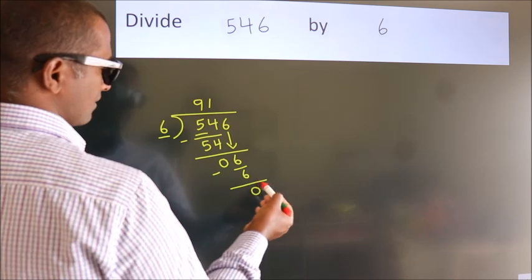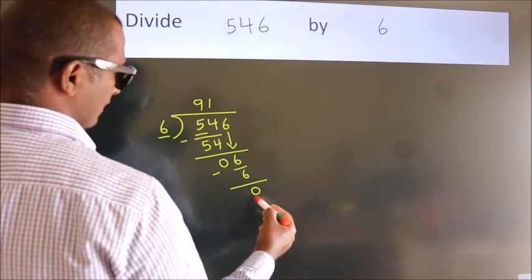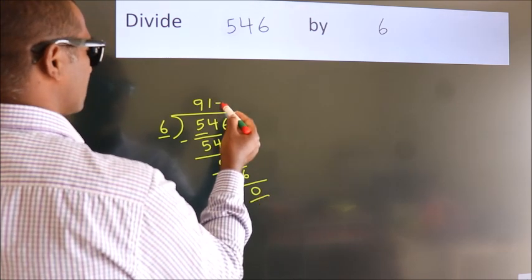After this, there are no more numbers to bring down and we got remainder 0. So this is our quotient.